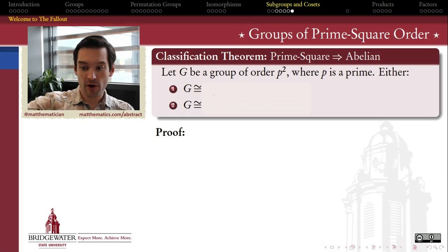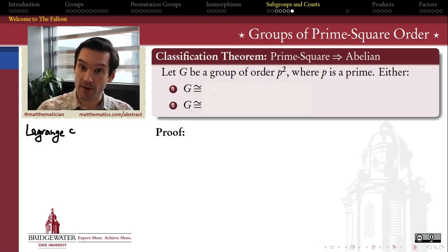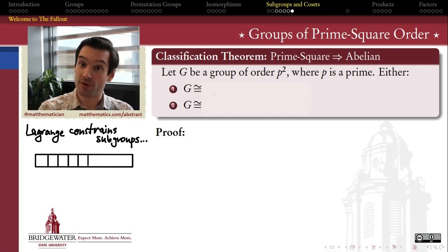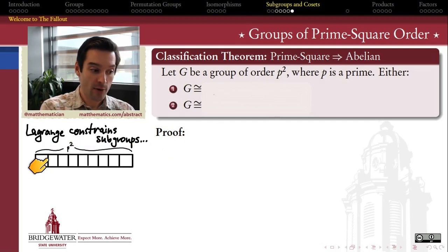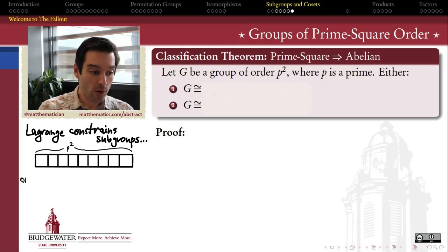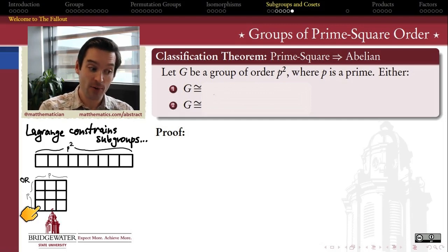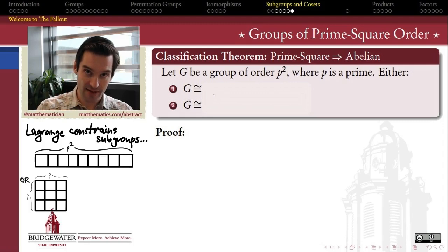If we recall what Lagrange's theorem tells us, it will tell us that the subgroups of such a group are pretty rigidly prescribed. According to Lagrange's theorem, any subgroup of a group of prime-square order is either going to be the entire group, having p-squared elements in it, or it's going to be a subgroup that has p elements and therefore p cosets inside of my group. The third possibility is that we just have the identity element, the trivial subgroup.